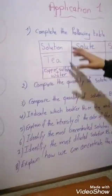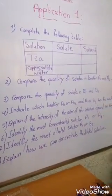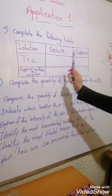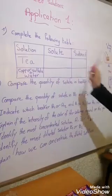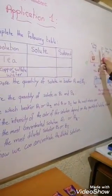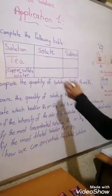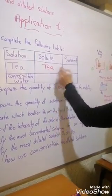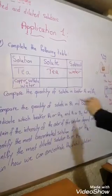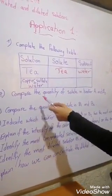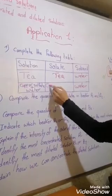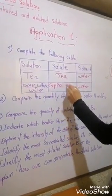Complete the following table: for the tea solution, the solute is the tea bag and the solvent is water. For the copper sulfate solution, the solute is copper sulfate and the solvent is water.